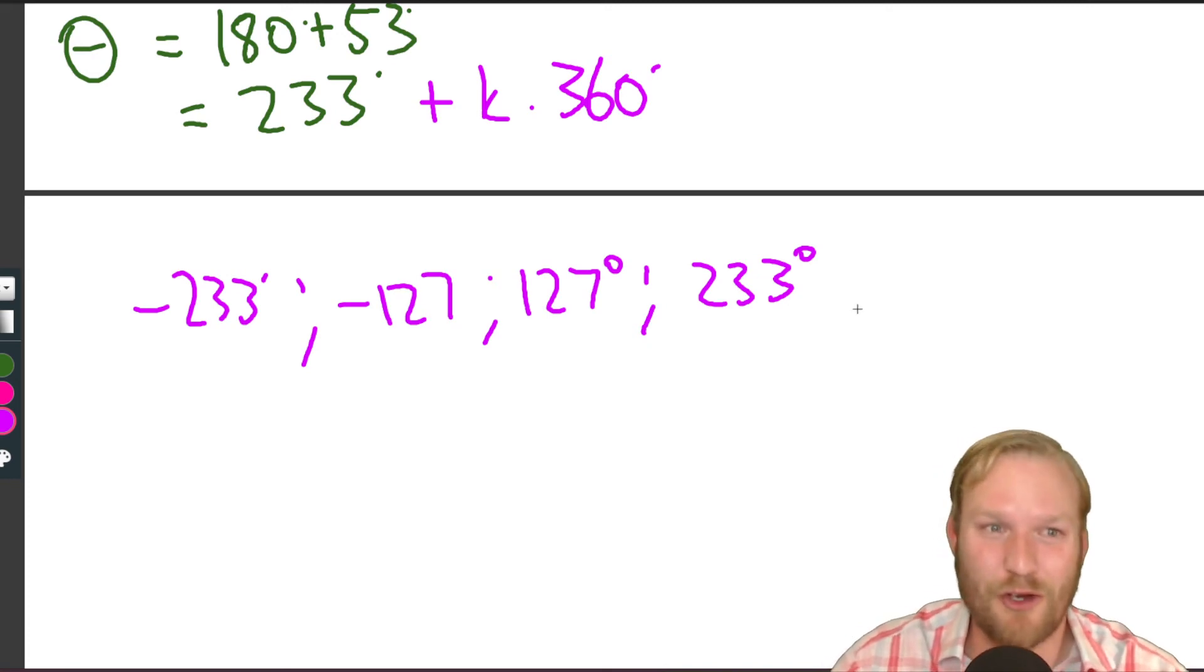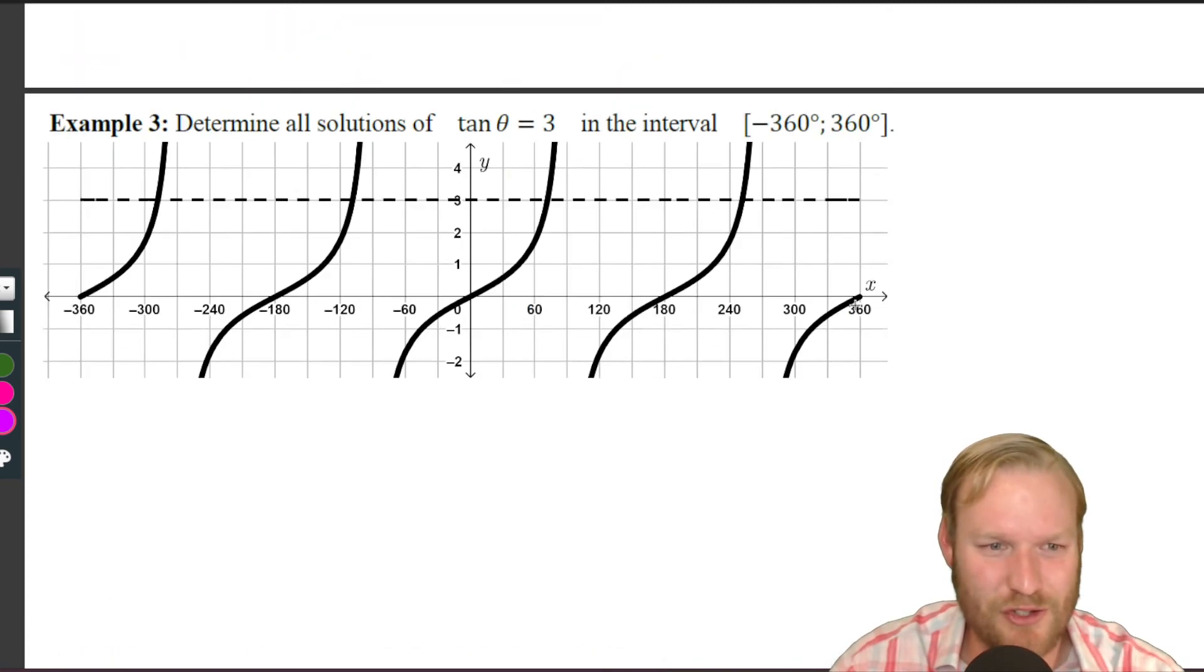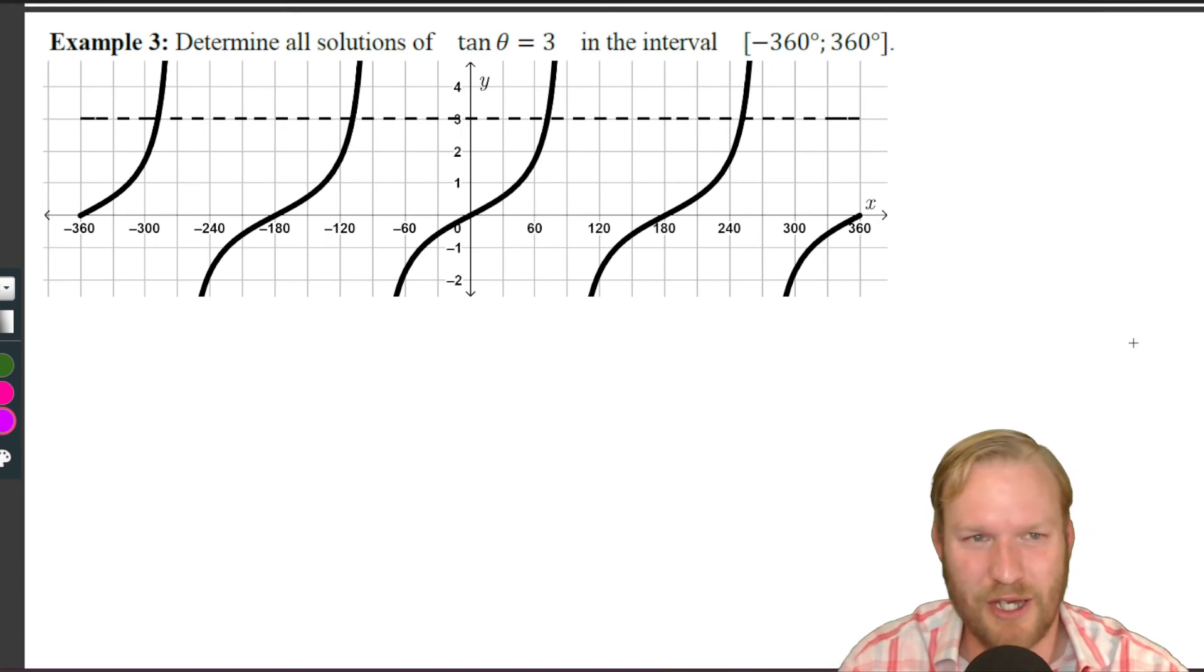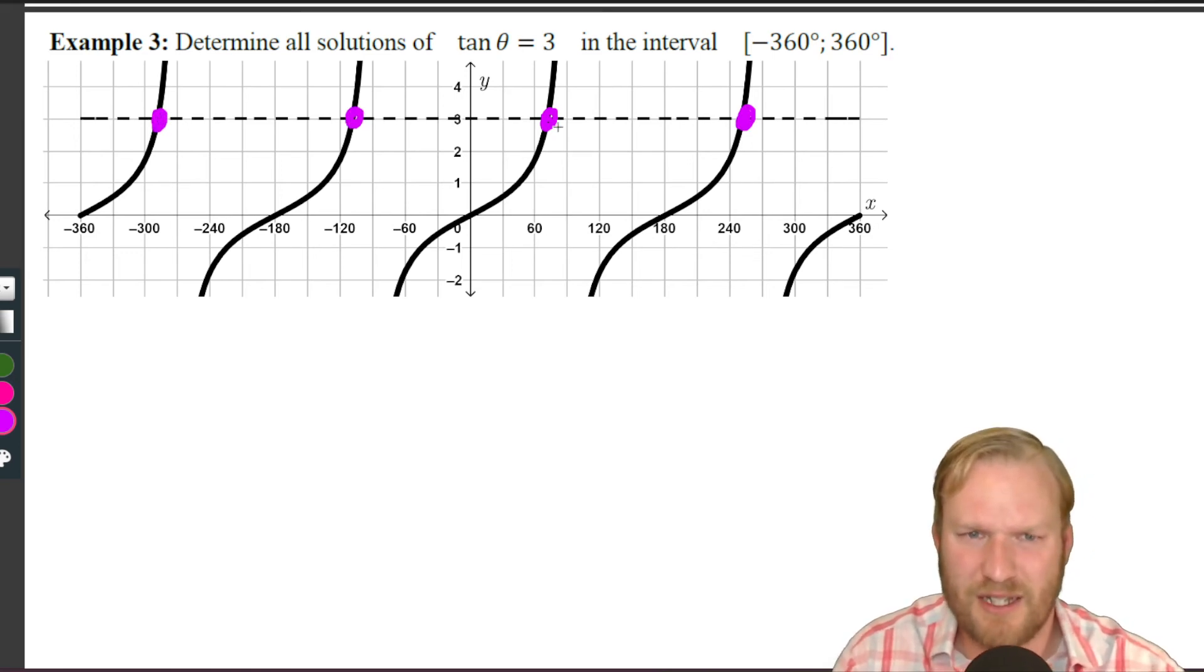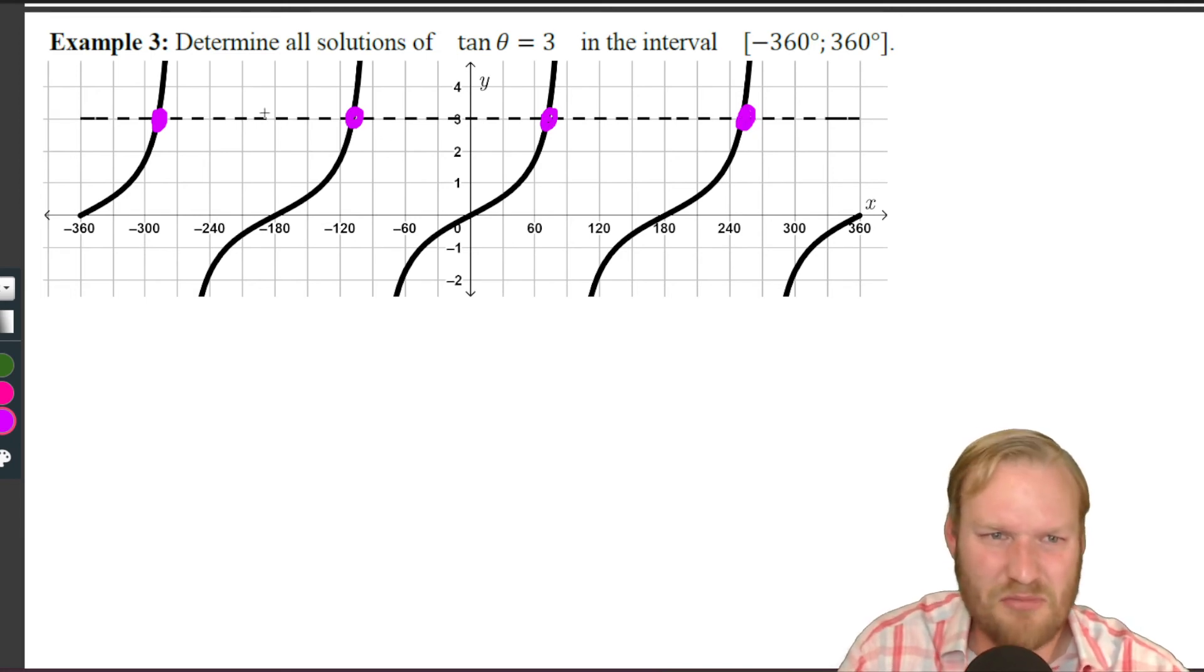Let's head into another example while we're here. Example 3: Determine all solutions of tan(θ) = 3 in the interval minus 360 to 360. So again, graph's drawn for you here, tan(θ), and we're seeing when is it equal to three. Now it looks like we've got a few solutions to go for here, and it looks like there's 60 something, 240 something, and we can see our four solutions.